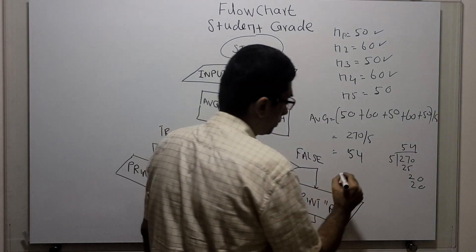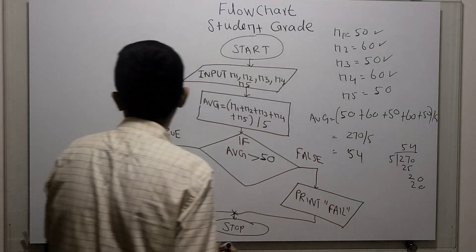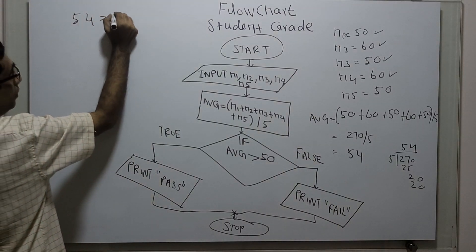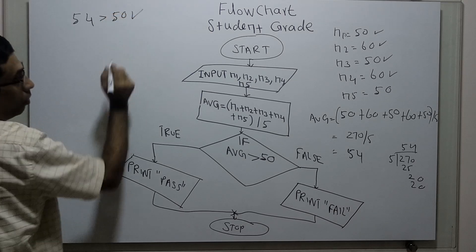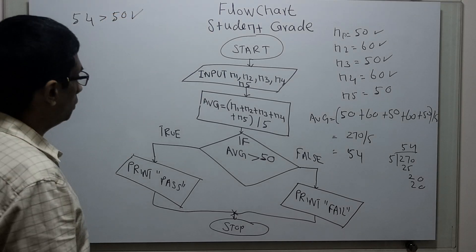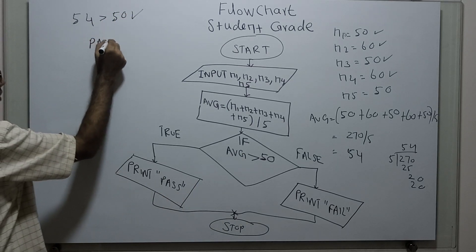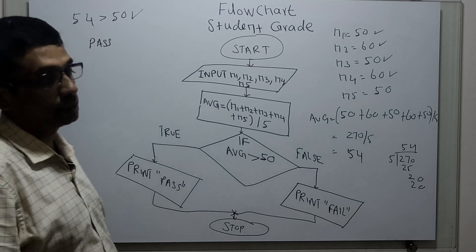So here we can say 54. Since 54 is greater than 50, we print the grade is pass. That's it.